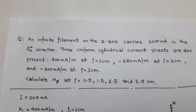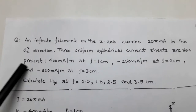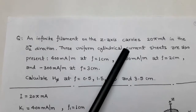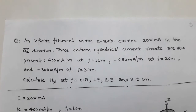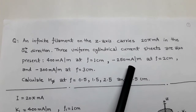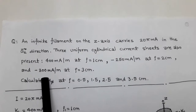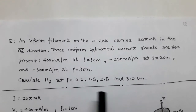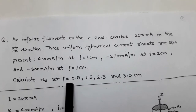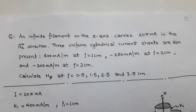The question is: an infinite filament on the z-axis carries 25 mA in the unit vector z direction. Three uniform cylindrical current sheets are also present: 400 mA per meter at ρ = 1 cm, minus 250 mA per meter at ρ = 2 cm, and minus 300 mA per meter at ρ = 3 cm. We have to determine H_φ at ρ = 0.5, 1.5, 2.5, and 3.5 cm.